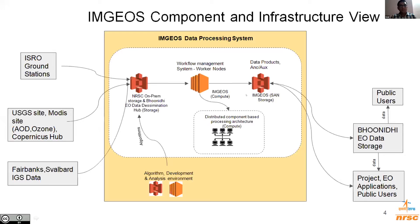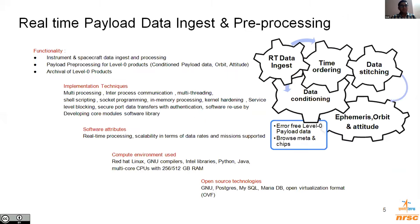The final generated data products are archived on the storage area network, and a copy is put to Bhoonidi for dissemination to users. Bhoonidi storage is like rolling archives — it stores the latest six months of data, while the entire historic archives are maintained at the IMGOS central storage. Now I'll delve a bit deeper into the processing components and the corresponding implementation techniques and the various open source technologies used.